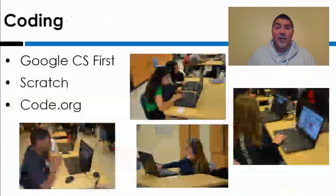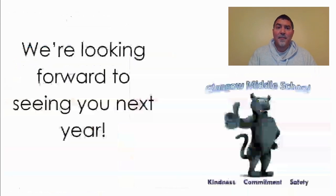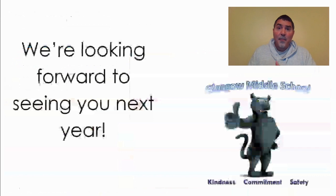For the second part of the class, we talk about coding. In CIT Part 1, students will be using Google CS First and Scratch, and then in Part 2 they'll be learning using Code.org. Both of these classes are 18 weeks long. You must take Coding and Innovative Technologies Part 1 in order to take Part 2, because we build from one class into the other.